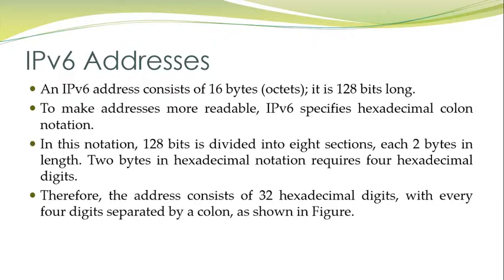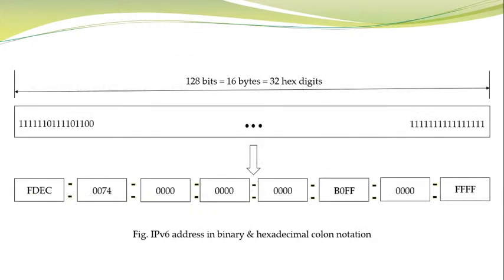Now we discuss IPv6 addresses. An IPv6 address consists of 16 bytes; it is 128 bits long. To make addresses more readable, IPv6 uses a hexadecimal colon notation. In this notation, the 128 bits are divided into 8 sections, each 2 bytes in length. Two bytes in hexadecimal notation requires 4 hexadecimal digits. Therefore, the address consists of 32 hexadecimal digits with every 4 digits separated by a colon, as shown in the figure.